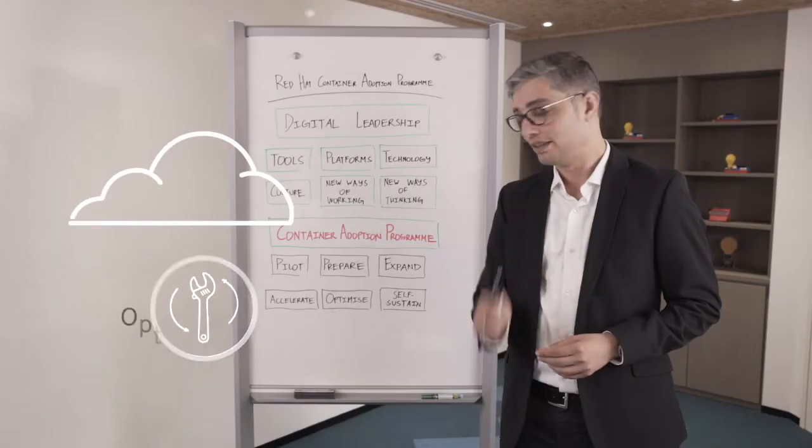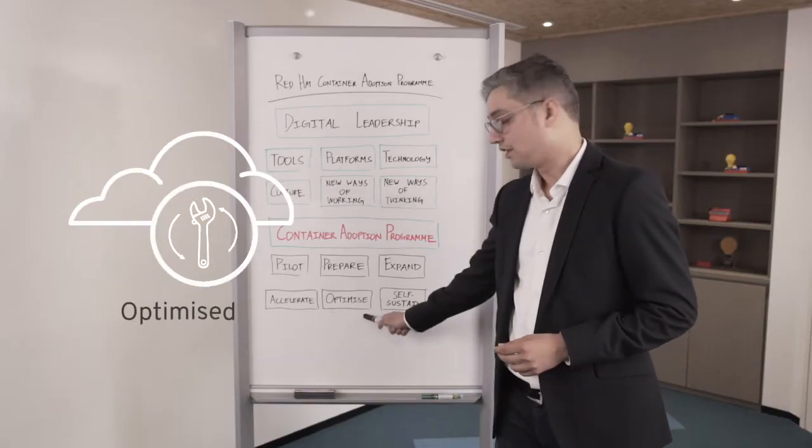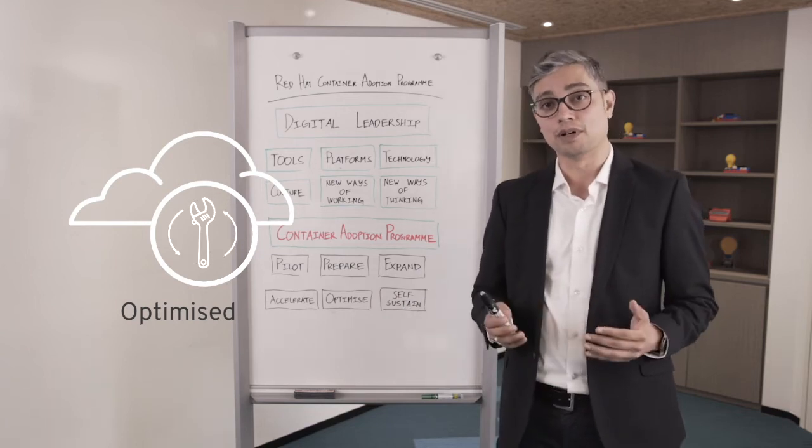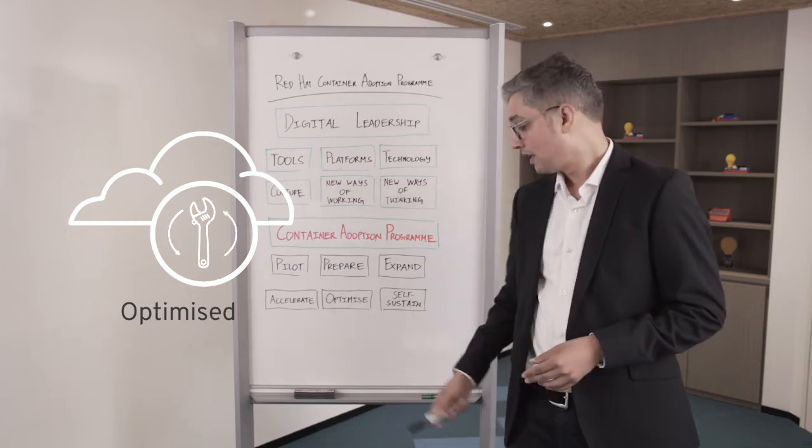Once you have accelerated the adoption, it's time to be adopted by leadership and inform the strategy. And this happens at the optimized phase. Post that, it's all about sustaining your digital leadership. At the self-sustained phase, we believe the culture, the technology, and the process changes that are needed to sustain the digital leadership position are permeated in your organization permanently.